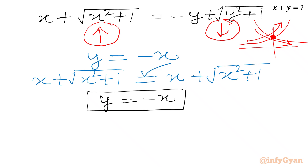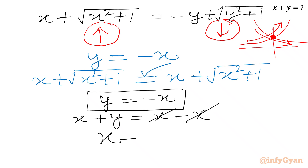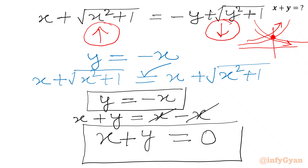Now we will add x to both sides. So x plus y on the LHS, and x plus minus x on the RHS, which cancels to 0. Therefore our required expression x plus y equals 0. That's our final answer. Bye bye.